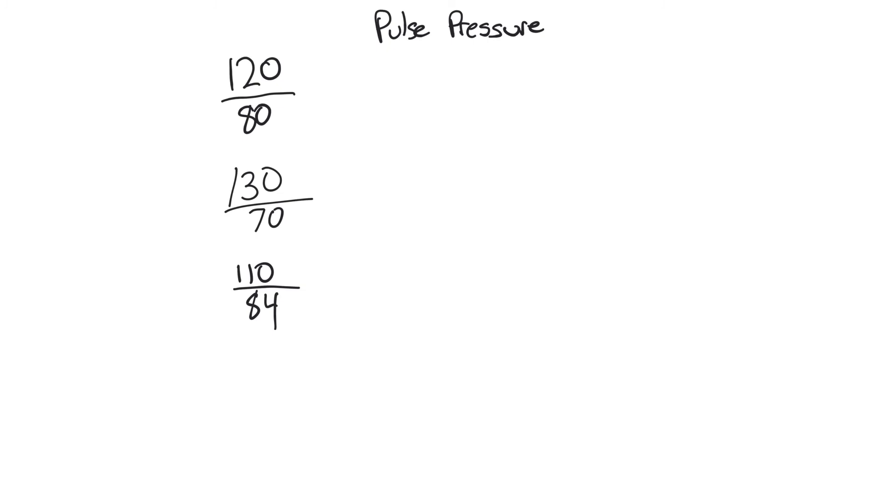So let's look at the difference between the two. We call that a pulse pressure. And this is another thing that is important when it comes to shock. So if we look at the systolic and the diastolic, if we look at the difference between them, so if I were to take 120 and subtract 80 from it, I would then have 40. And that's millimeters of mercury. That would be my pulse pressure. If I take 130 minus 70, I would then have 60. If I have 110 minus 84, that's 26.